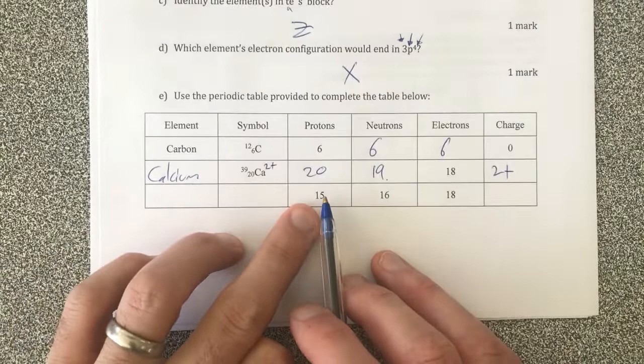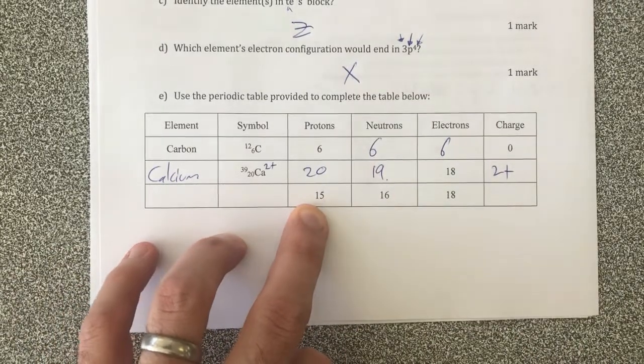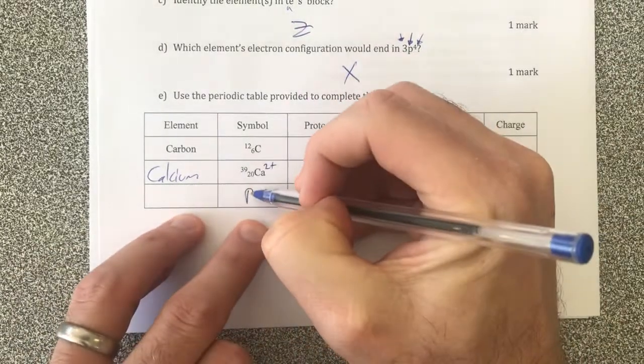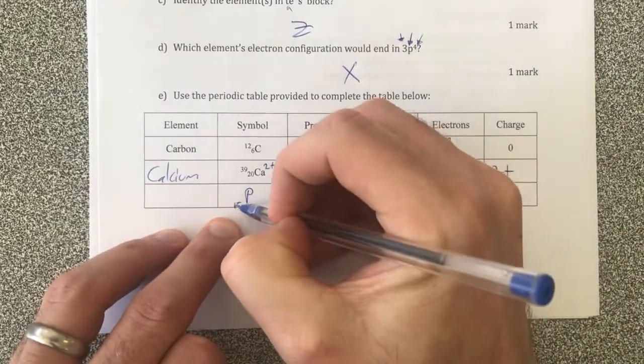Moving on, I've got 15 protons. If I get my periodic table, what is that going to be? I'm pretty sure it's going to be phosphorus.